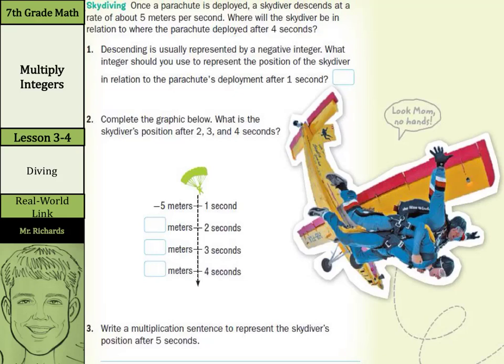Descending is usually represented by a negative integer. What integer should you use to represent the position of the skydiver in relation to the parachute's deployment after 1 second? If we're going 5 meters per second down, we can use the integer negative 5.